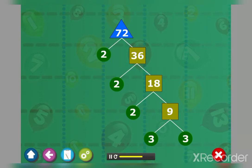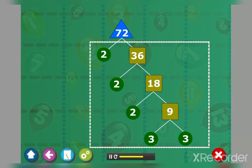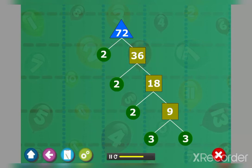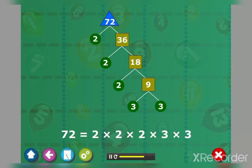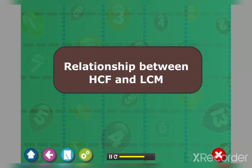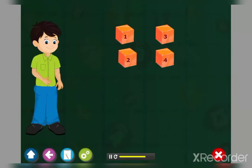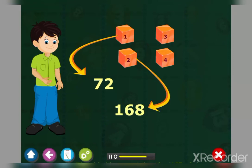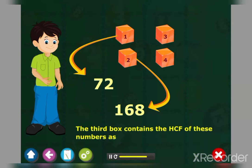Let's study the relationship between HCF and LCM. Raju knows the first box contains the number 72 and the second box contains the number 168. The third box contains the HCF of these numbers as 24. Can Raju find out the LCM of the numbers in the fourth box?